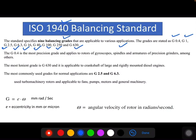G0.4 is the most precision grade and it mainly applies for the rotors of gyroscopes, spindles, armatures, precision grinders among others. The most lenient grade is G630 and is applicable for the crankshaft of large and rigidly mounted diesel engines. In industries, the most commonly used grades are G2.5 and 6.3, but in recent days, G2.5 is mainly used for the turbo machinery rotors and also in general fan application, pumps, motors, and general industries. So G2.5 is most preferable in recent days.